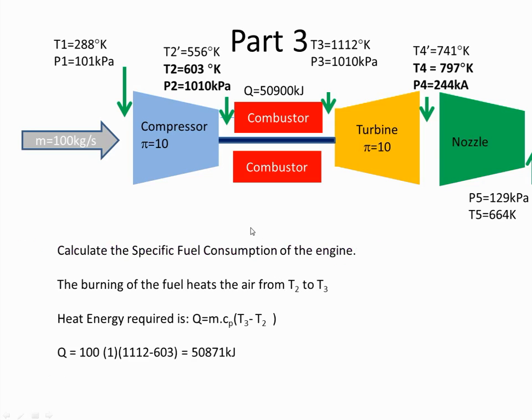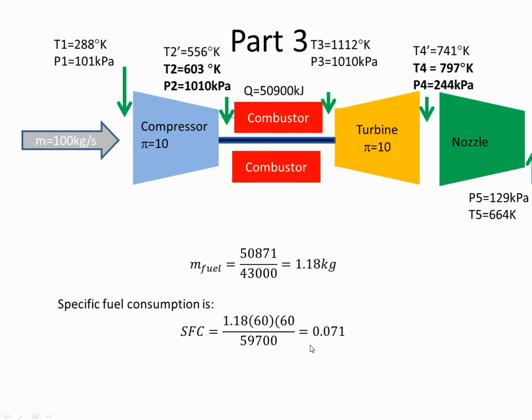I can work out the heat required. So I wanted to heat the air from 603 degrees Kelvin to 1112. And when I do that I get a value of 50,871 kilojoules. Knowing the amount of kilojoules required and I know the heating value of the fuel I can work out the mass of the fuel. And I can work out specific fuel consumption. So specific fuel consumption is the mass of fuel per hour, so how much fuel we burn per hour, divided by the thrust, and it works out to be 0.071.